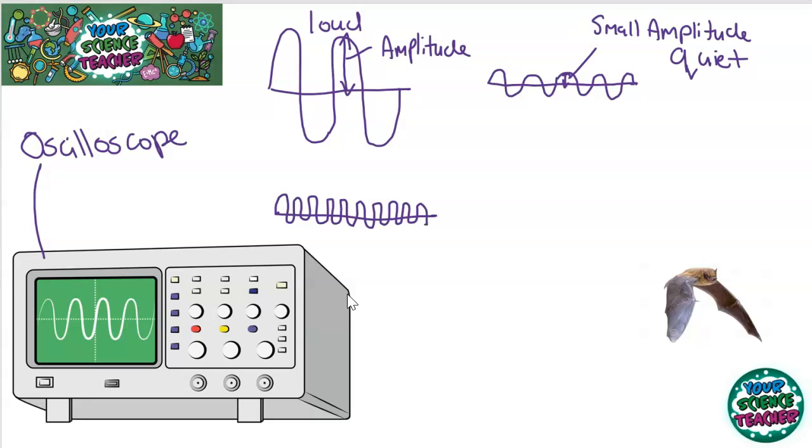An example of something that has really high frequency could be an opera singer, or it could also be a mouse. They have really high frequency.